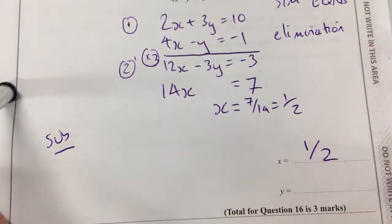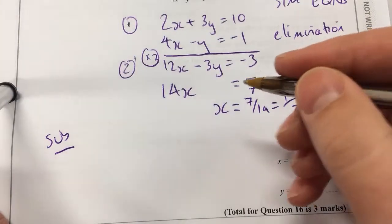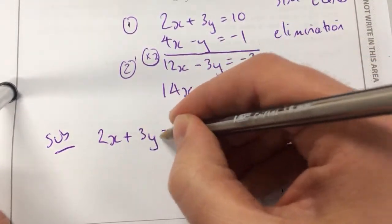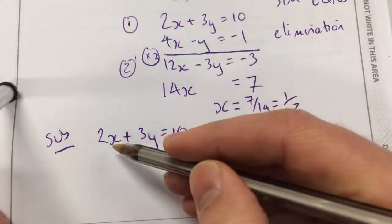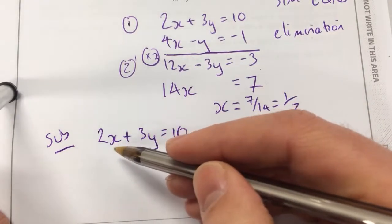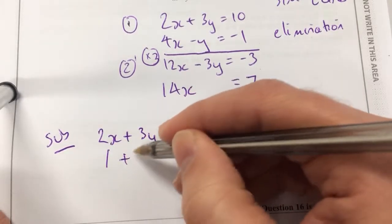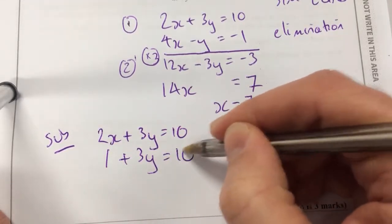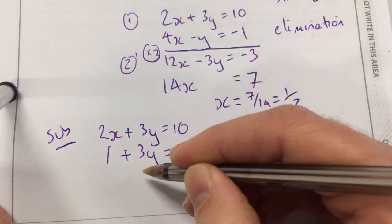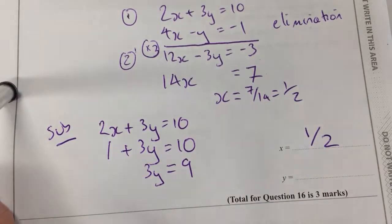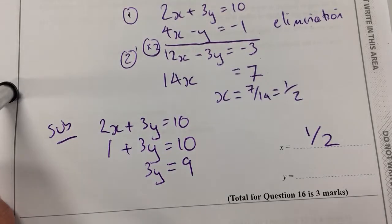So I substitute it back into one of the original equations, and we've chosen to put it into 2x plus 3y equal to 10. So I replace the x with a half, and I get 1 plus 3y equal to 10, and I solve for y to get 3y equal to 9. So y must be 3.